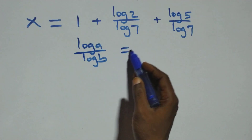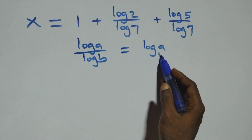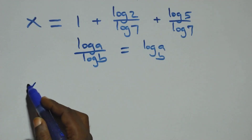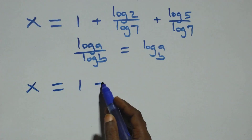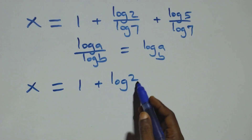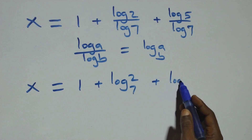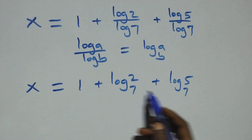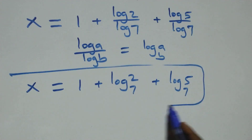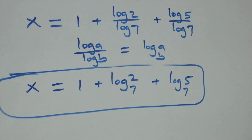Applying the change of base rule — log a over log b equals log a to base b — we have x equals 1 plus log base 7 of 2 plus log base 7 of 5. That is the value of x.